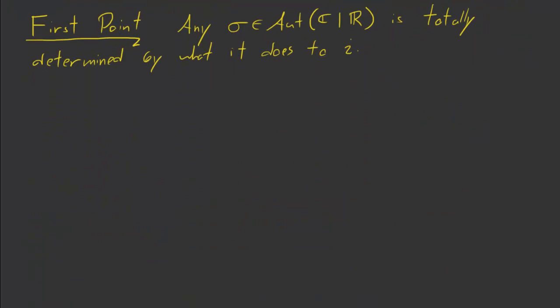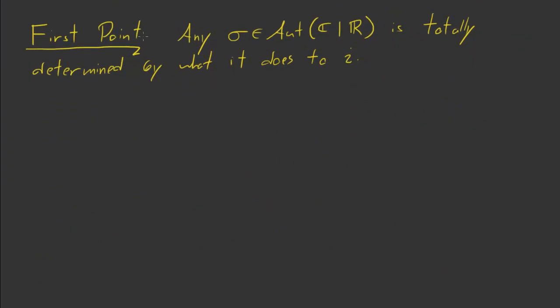So the first point, the first idea, is that if you've got any σ in Aut(ℂ|ℝ), it's totally determined by what it does to i. In other words, we know what σ(i) is. So σ(i) determines, it's going to determine σ(ζ) for every complex number ζ. Once you know σ(i), the game is up and nothing more can happen. So why is this?